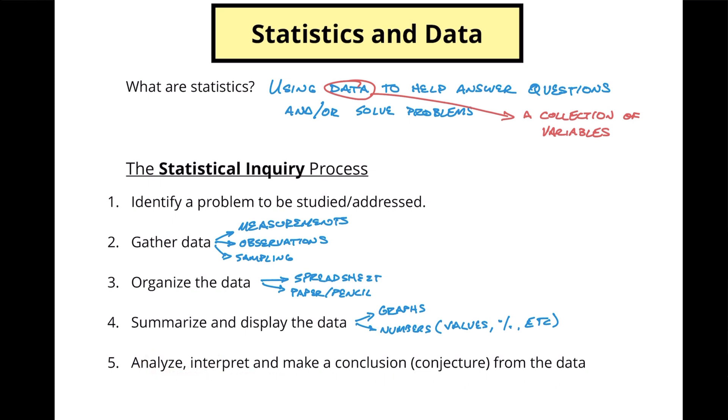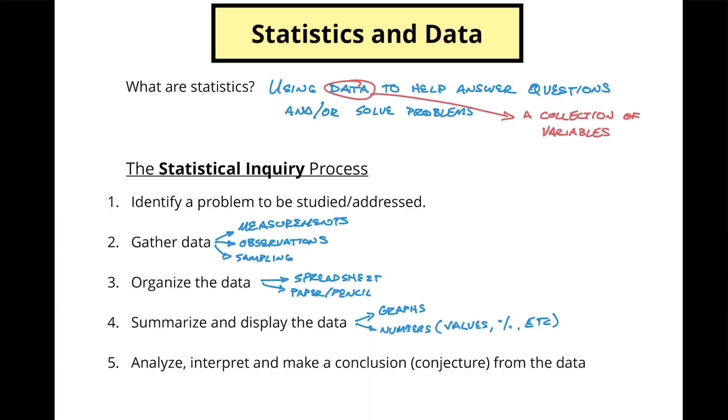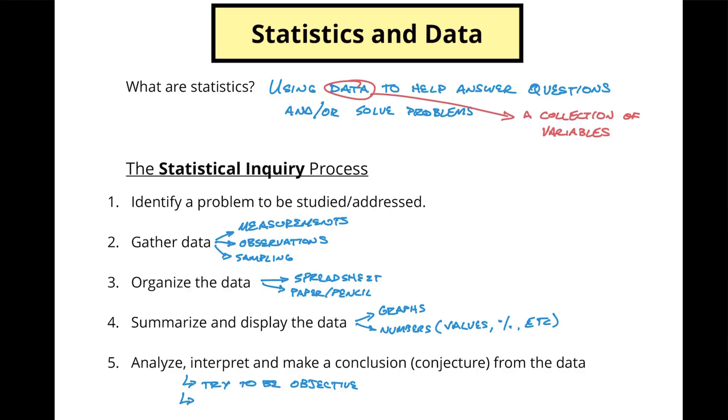Finally, you're going to analyze and interpret and make a conclusion, which we call a conjecture from the data. A conjecture is when you are making a conclusion from a set of observations. Now some things to keep in mind: when you are doing this analysis, you need to try to be objective. That means you are not trying to influence or have your own personal opinions jump in on the data that you have. You also want to discuss any possible limitations — things that might have influenced the outcome, like how did I gather the data, did I gather enough data, did I gather the right type of data?